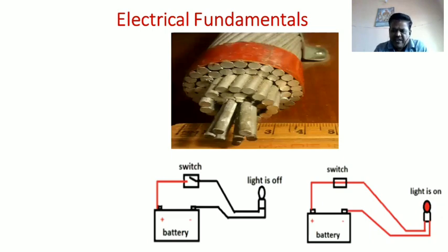Based on the number of free electrons present in any material, materials are classified into three groups: conductor, insulator, and semiconductor. A conductor is a material which has the maximum number of free electrons, which offers very less resistance to the flow of current — in other words, it is a material which allows current to pass through its body.